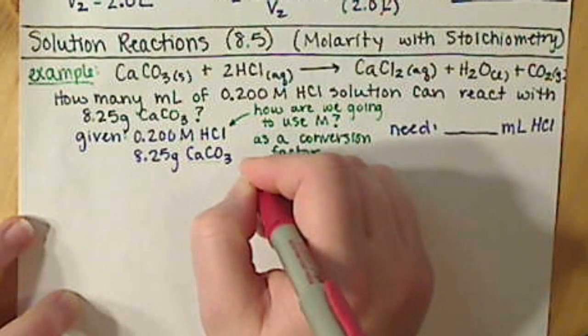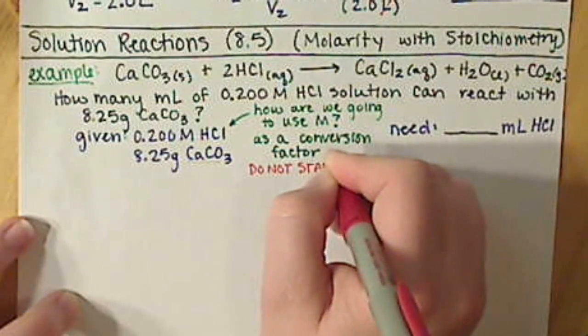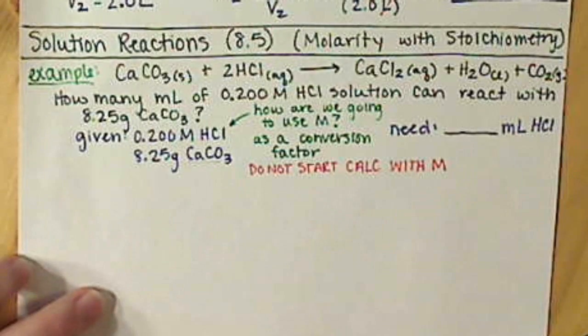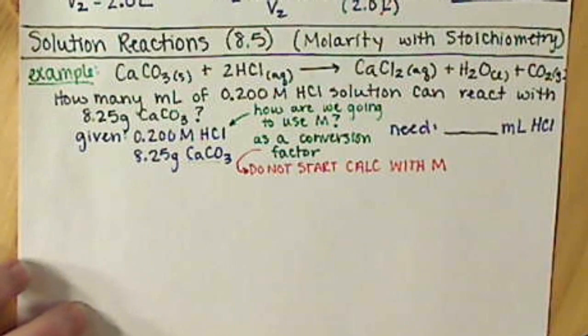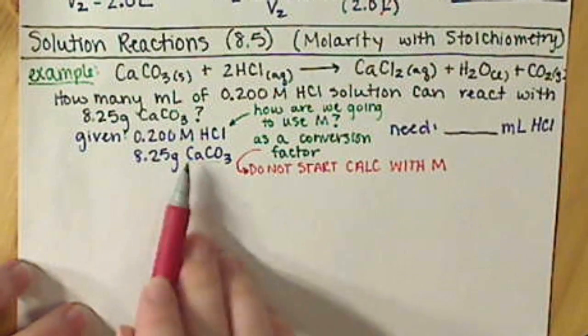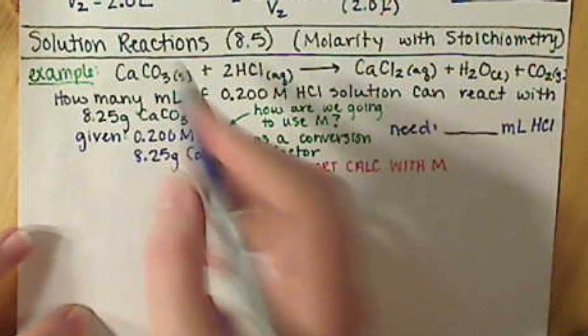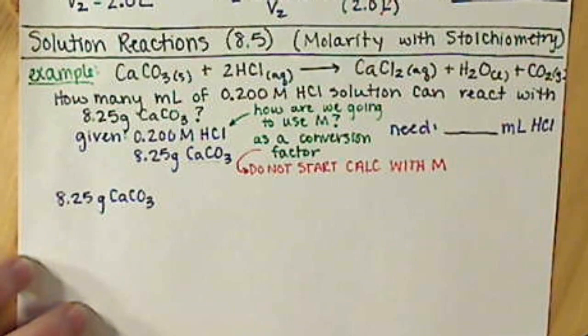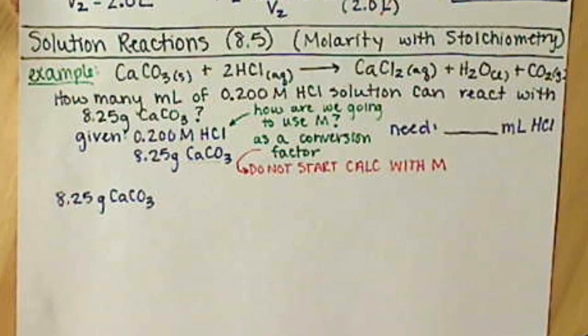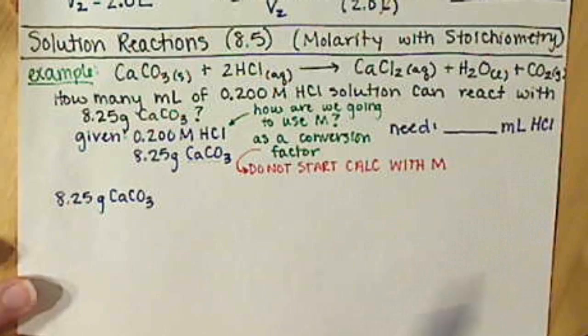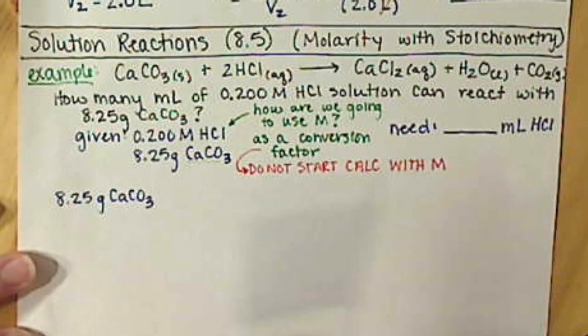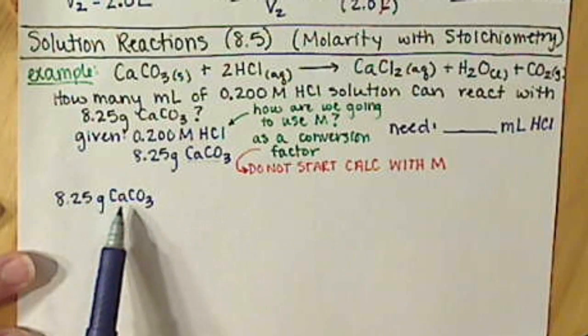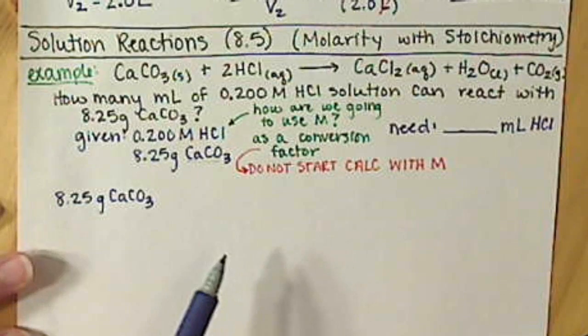So if we're going to use molarity as a conversion factor, do not start with molarity then. If we're going to use it as a conversion factor, we do not want to start the calculation with molarity. So that leaves us with starting with something else that we've been given. We're going to have to start with that 8.25 grams of calcium carbonate. So we're trying to get to milliliters of HCl. We're changing compounds. We're going from calcium carbonate to hydrogen chloride.